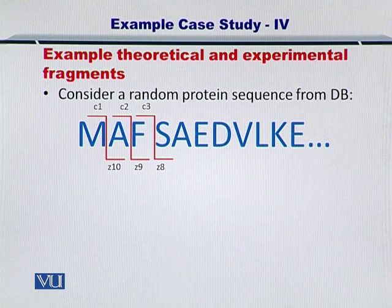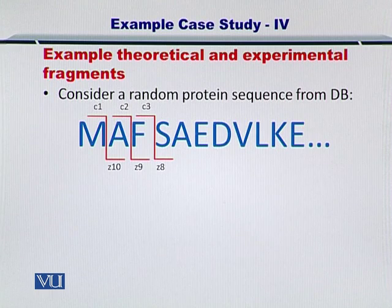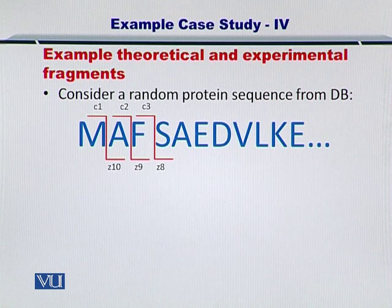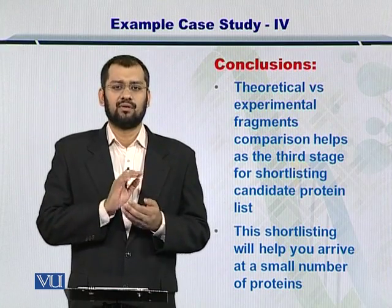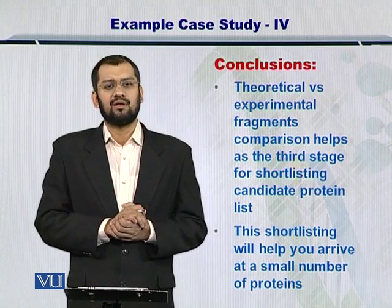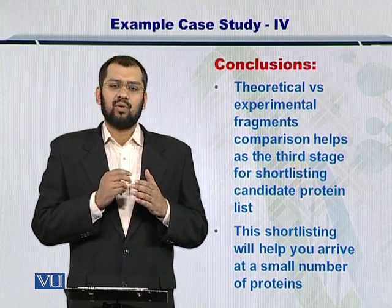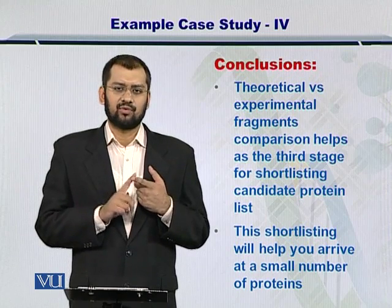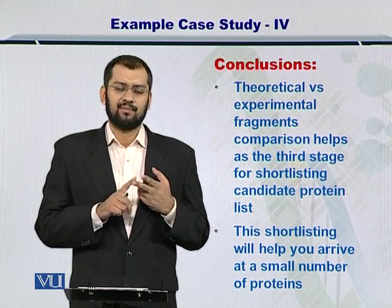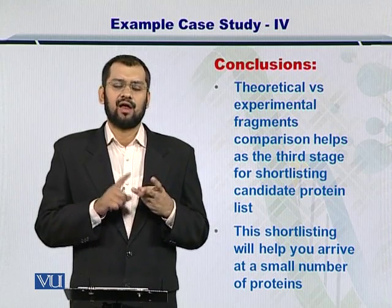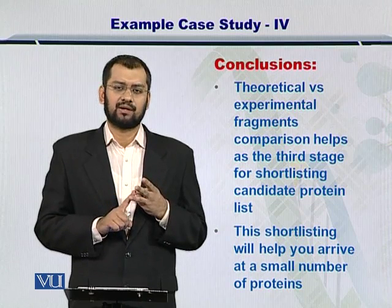Once you compare each fragment with the theoretical spectrum, you can know how many experimental peaks match with how many theoretical peaks. If that number is high, it means that the experimental protein sample is the same as the candidate protein. Using this strategy, you can perform a theoretical spectrum comparison with the experimental spectrum. So now you have the MS1 intact protein mass, the MS2 peptide sequence tag, and third, the experimental and theoretical spectrum match.